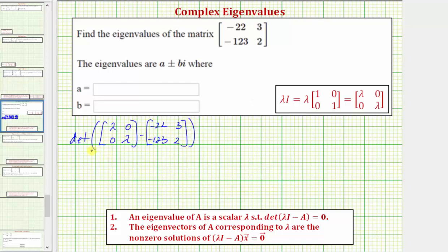So to find the eigenvalues, this determinant must equal zero. Let's write the determinant using vertical bars, where the first row would be lambda minus negative 22, or lambda plus 22, and then zero minus three, so negative three. The second row: zero minus negative 123, that's positive 123, and the last element is lambda minus two. The value of this two-by-two determinant is this product minus this product.